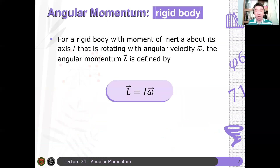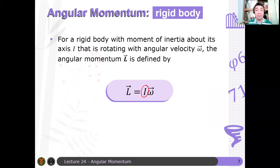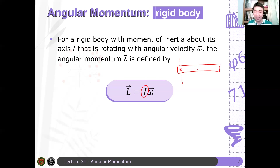We can also define the angular momentum of a rigid body. For a rigid body with moment of inertia I that's rotating about its axis with some angular velocity omega, the angular momentum L is defined by L = Iω. Important here is that the measurement of the moment of inertia is about the axis of rotation we're considering. For example, if this is a rod and this is its axis of rotation, you need to calculate the moment of inertia about this axis — not about the center of mass. If you need to determine the moment of inertia about a different axis, you may need to use the parallel axis theorem.